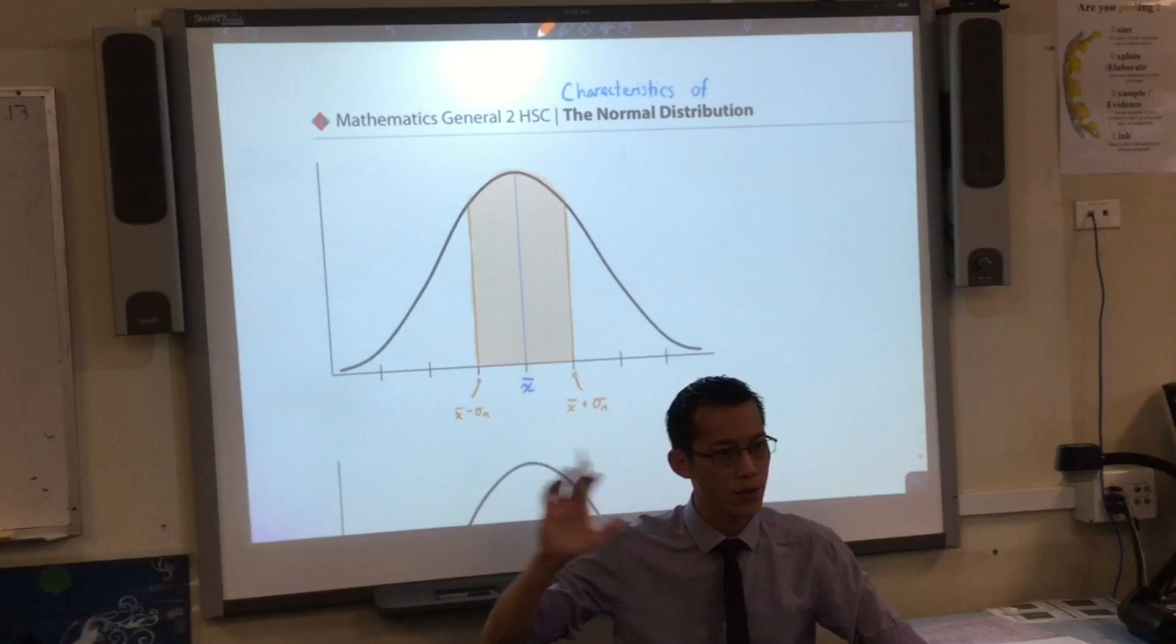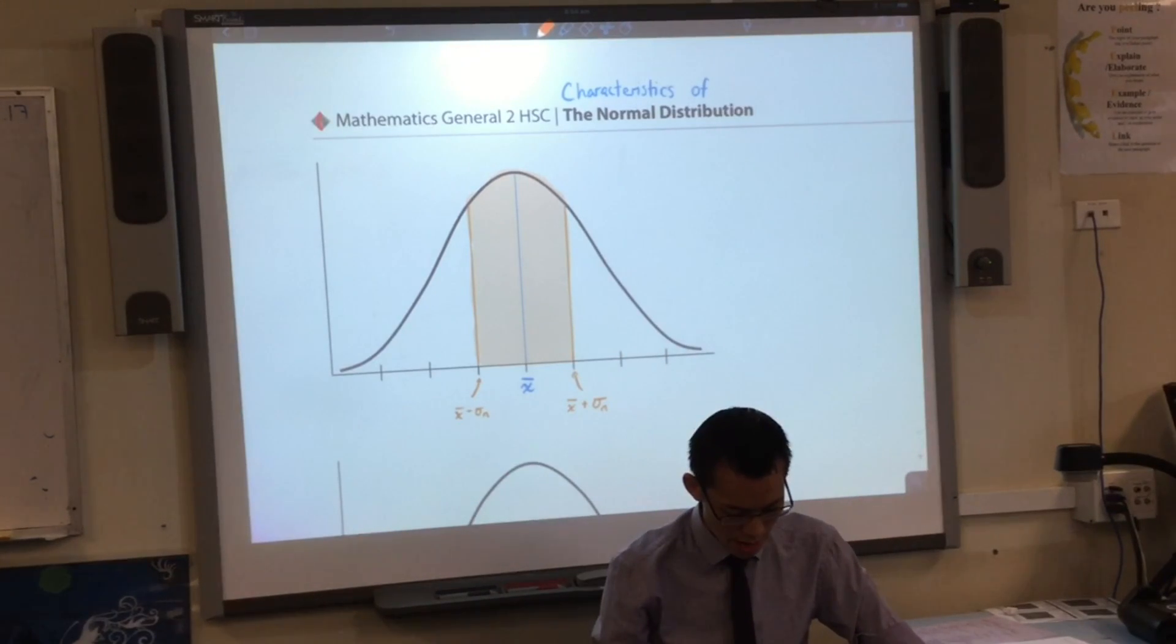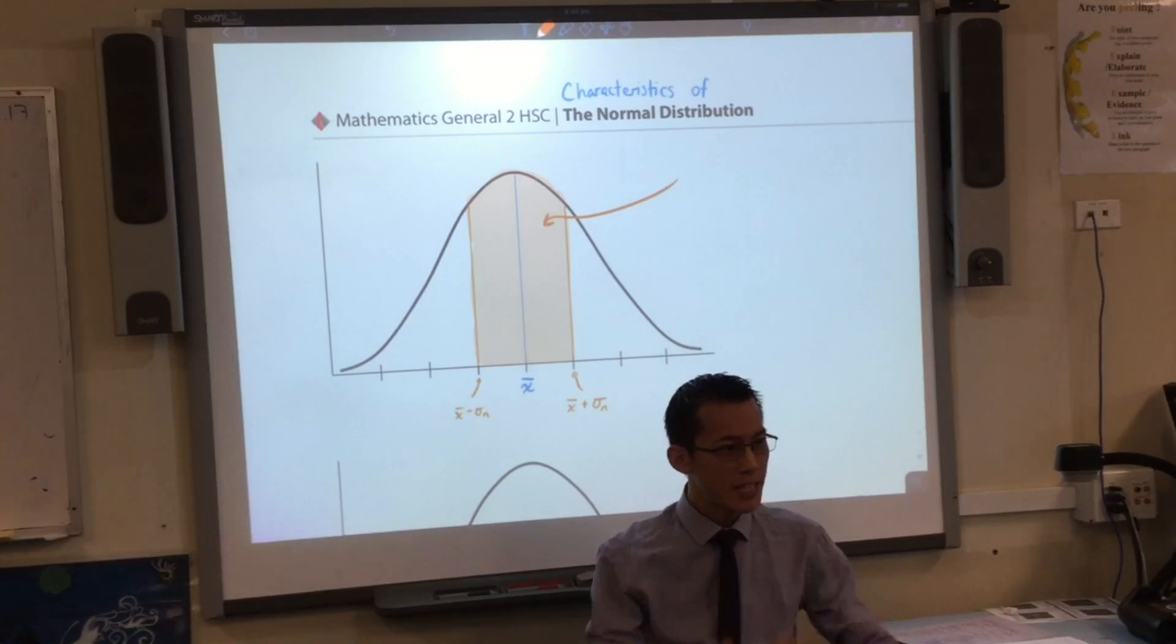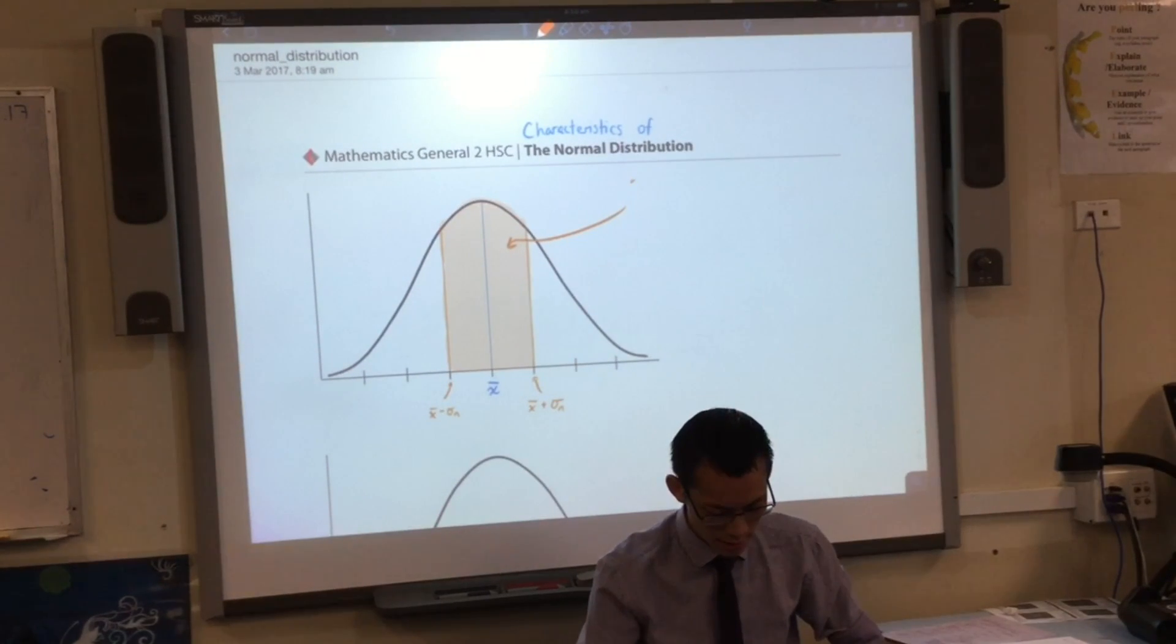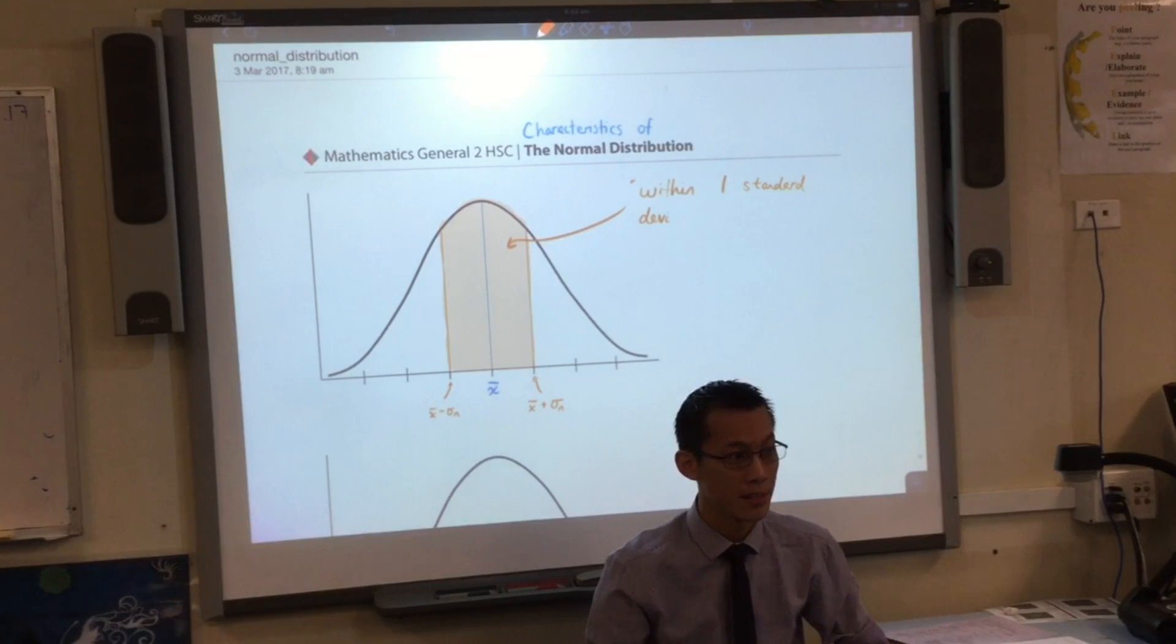So the way I would describe this group of people that I've shaded in here is that they are within one standard deviation of the mean. That's a really important phrase. So I'd actually like you, I've given you some space on the right-hand side. So we'll write this: all in this group of people I've shaded in the middle, they are within one standard deviation of the mean. They may be above, they may be below, but in terms of distance, they're within that range.